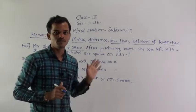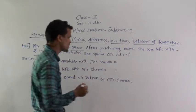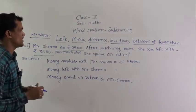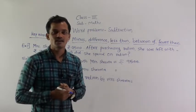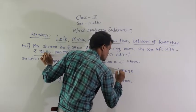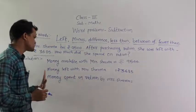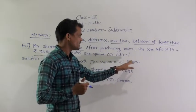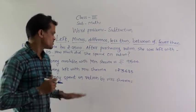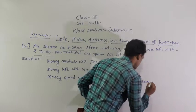Write the solution. Money available with Mrs. Sharma: rupees 9500. Money left with Mrs. Sharma after purchasing ration: rupees 3685. We need to find the money spent on ration. Money spent on ration = rupees 9500 minus rupees 3685.